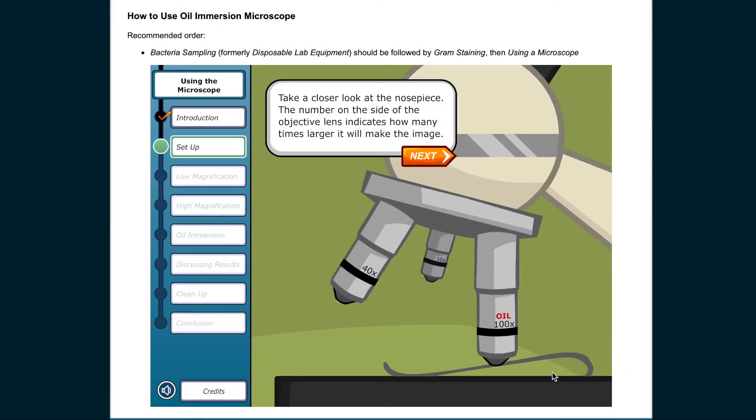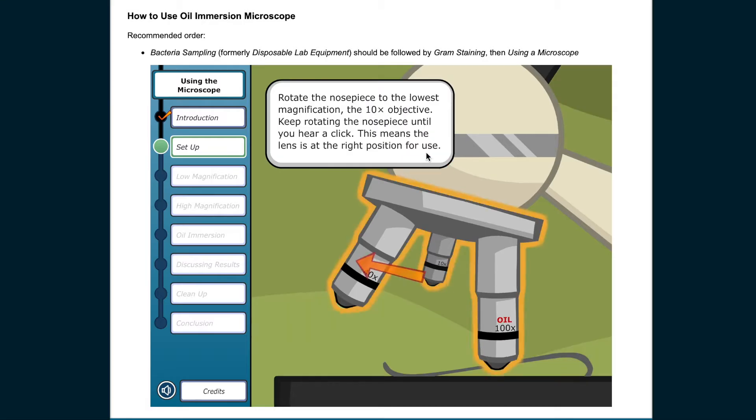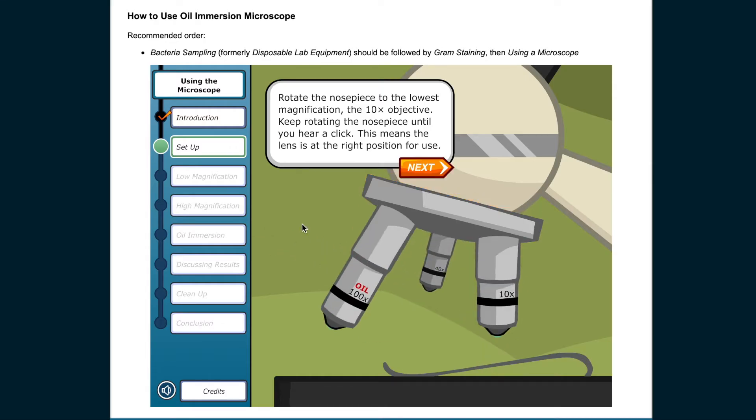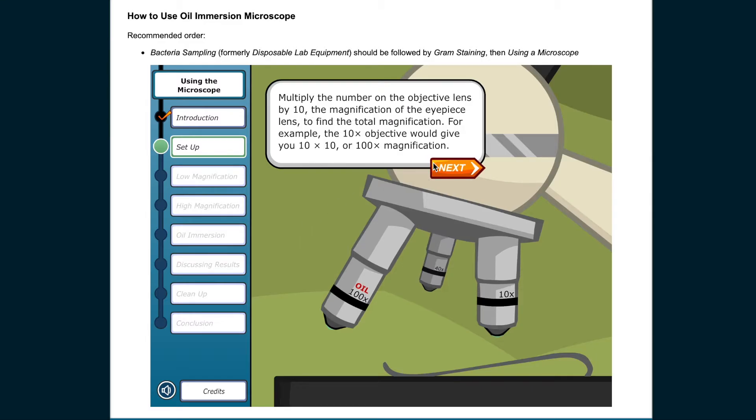Start by making sure the microscope is plugged in. Take a closer look at the nose piece. The number on the side of the objective lens indicates how many times larger it will make the image. Rotate the nose piece to the lowest magnification, the 10x objective. Keep rotating the nose piece until you hear a click. This means the lens is at the right position for use. Multiply the number on the objective lens by 10, the magnification of the eyepiece lens, to find the total magnification. For example, the 10x objective would give you 10x10, or 100x magnification.